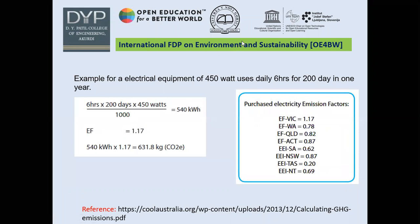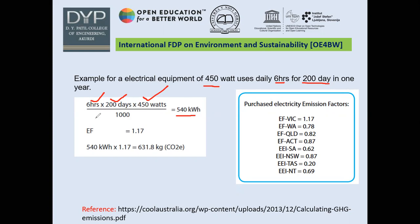For example: an appliance rated at 450 watts, used 6 hours daily for 200 days in a year. First, convert to kilowatt-hours: 6 hours × 200 days × 450 watts ÷ 1000 = 540 kWh. With an emission factor of 1.17, multiplying gives 631.8 kg of CO2 emitted per year for that equipment.